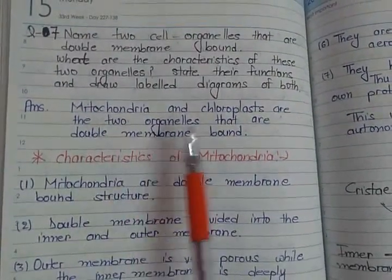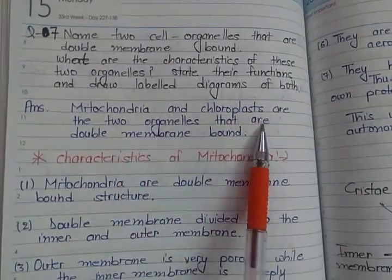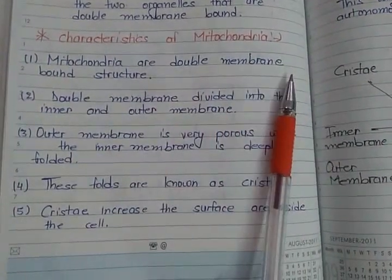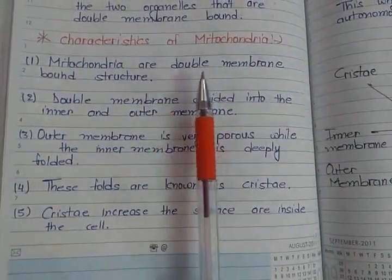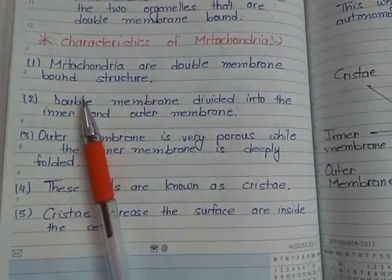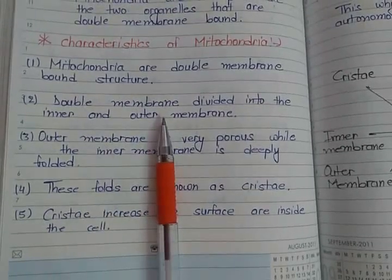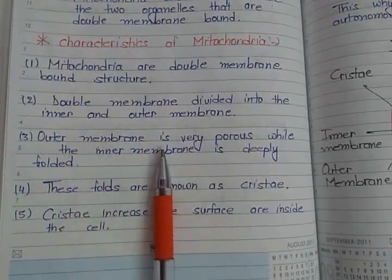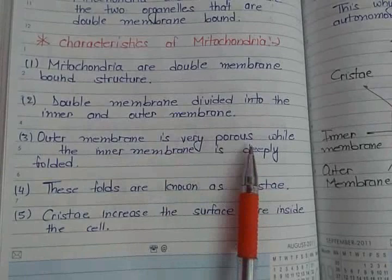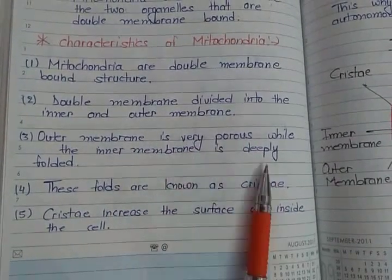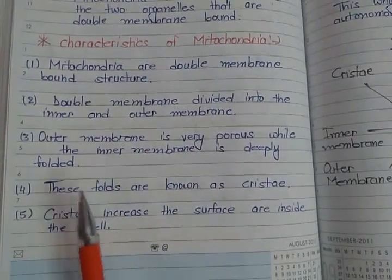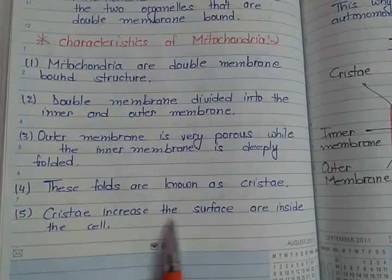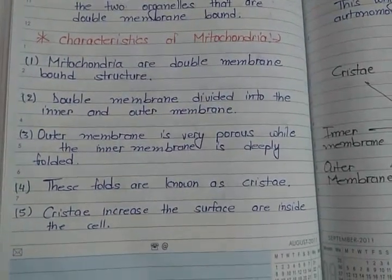Characteristics of mitochondria: Mitochondria have a double membrane structure divided into inner and outer membrane. The outer membrane is porous while the inner membrane is deeply folded. These folds are known as cristae, and they increase the surface area inside the cell.